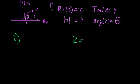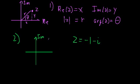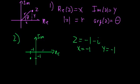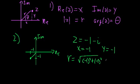We're going to rewrite the complex number negative one minus i in polar form. First, let's draw out our complex plane. The real part is negative one and the imaginary part is also negative one, so we plot it by going left one and down one. Now we figure out the magnitude: R equals the square root of negative one squared plus negative one squared, which equals radical two.